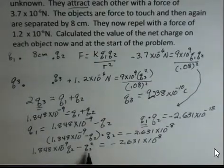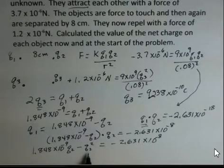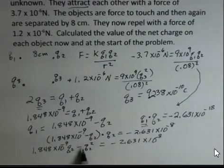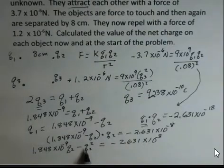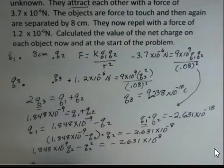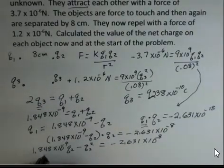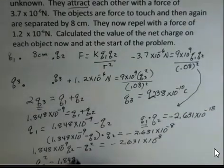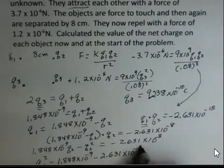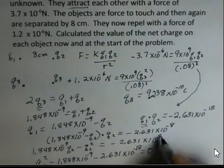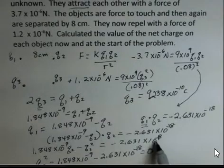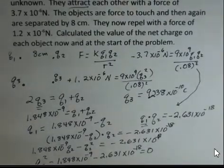So now we'll take this and substitute here for Q1. And I'll have 1.848 times 10 to the minus 9 minus Q2 times Q2 is equal to minus 2.631 times 10 to the minus 18. So replacing the symbol Q1 with its equivalent. 1.848 times 10 to the minus 9 minus Q2. I'm going to distribute Q2 through here. So I have 1.848 times 10 to the minus 9 Q2 minus Q2 squared. This is a quadratic equation. I just noticed that I dropped this 10 to the minus 18.